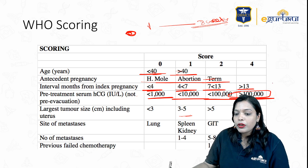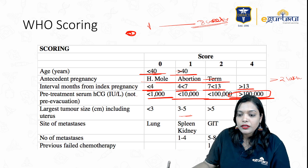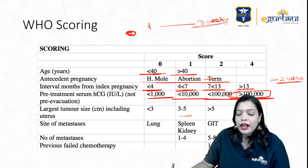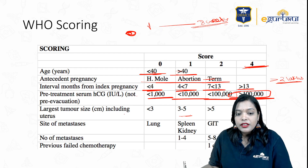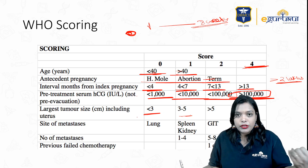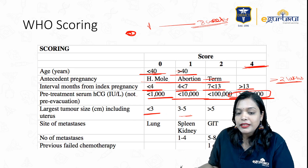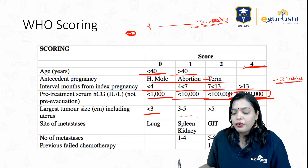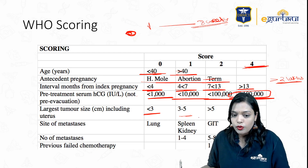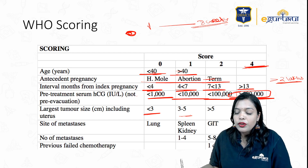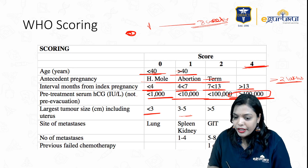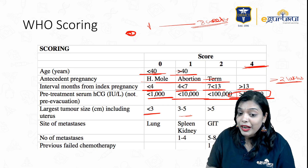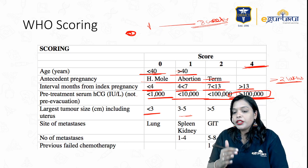Here the patient had more than 2 lakhs, so the score jumps directly to 4. Largest tumor size including the uterus: less than 3 centimeters scores 0; 3 to 5 cm scores 1; more than 5 cm scores 2. Site of metastases: lung scores 0; spleen and kidney score 1; GI tract scores 2; liver and brain score 4. Number of metastases: 1 to 4 scores 1; 5 to 8 scores 2; more than 8 scores 4. Previous failed chemotherapy: 1 drug scores 2; more than 2 drugs scores 4.